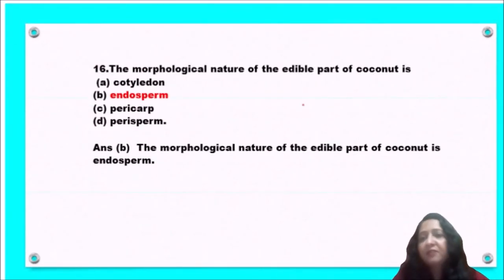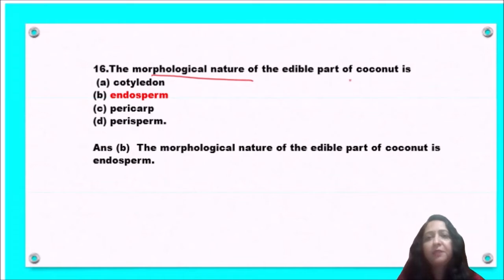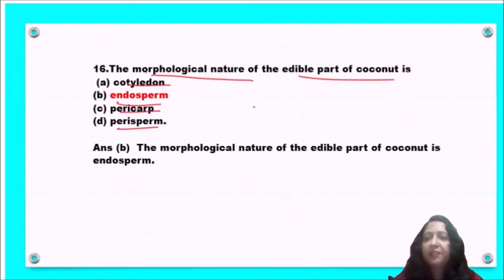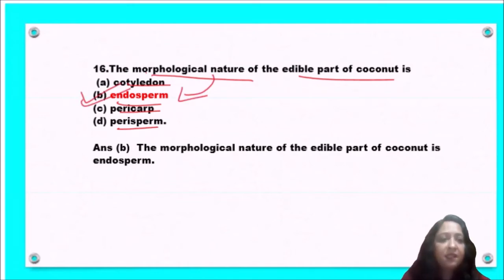Next question: the morphological nature of the edible part of coconut is cotyledons, endosperm, pericarp, or perisperm? The morphological nature of the edible part of coconut is endosperm. So option B is the correct answer.